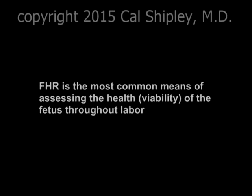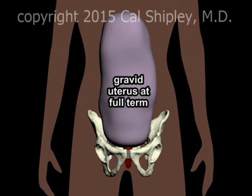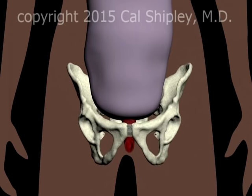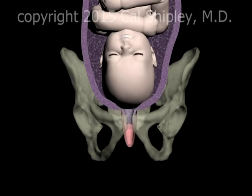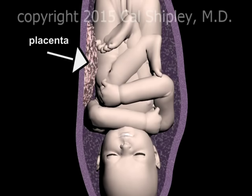To better understand how FHR works, let's take a look at some fetal and maternal anatomy. Depicted here is a pregnant or gravid uterus at term — that is, carrying a fetus with a gestational age of approximately 40 weeks. Switching to a cross-sectional view of the uterus, we see the fetus contained within and attached to the wall of the uterus: the placenta.